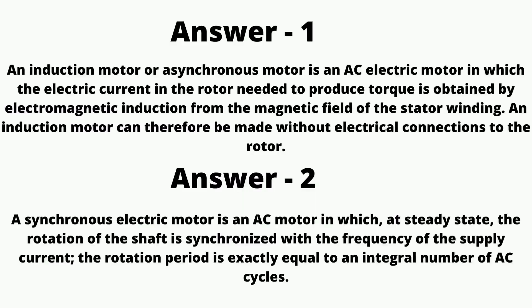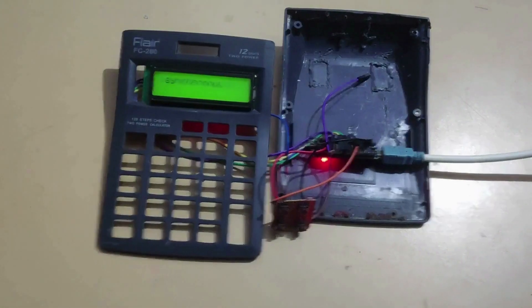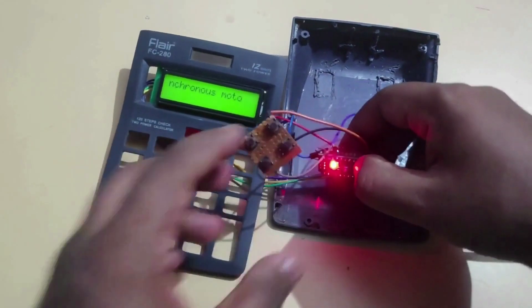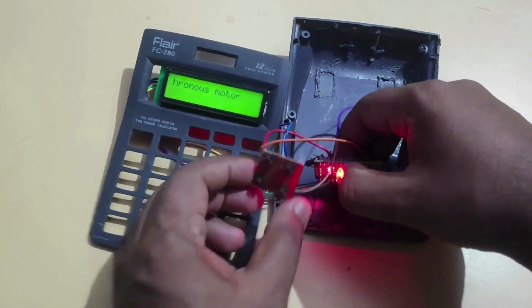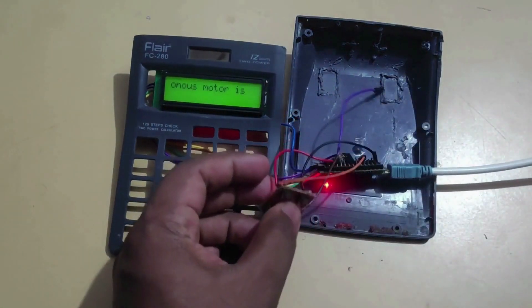These are the two answers stored in Arduino. Circuit 4: adding a button to our previous circuit. Now add 4 buttons to our circuit, so that each button will be responsible for each answer stored in Arduino.